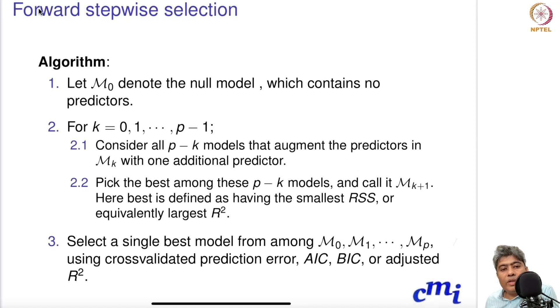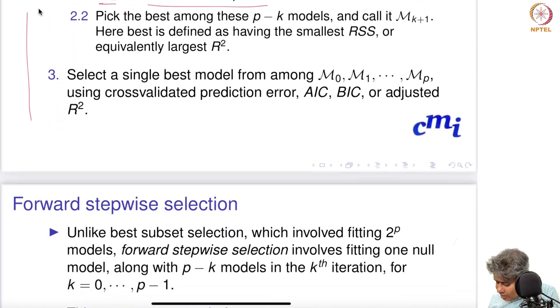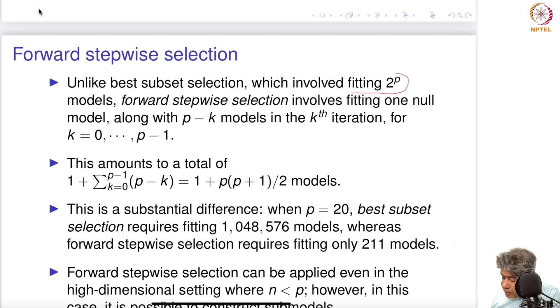What does forward stepwise selection do? It starts with M₀, the null model which contains no predictors. Then the loop starts, k = 0, 1, 2, up to p-1. Consider p-k models that augment the predictors in Mₖ with one additional predictor. If you are at the kth step, you already have chosen x₁ to xₖ. It will keep all these k models and then try the rest of the features which have not been tried. These features will be added here and check where the residual sum of squares is being minimized or not. Then the rest is exactly the same as best subset selection.